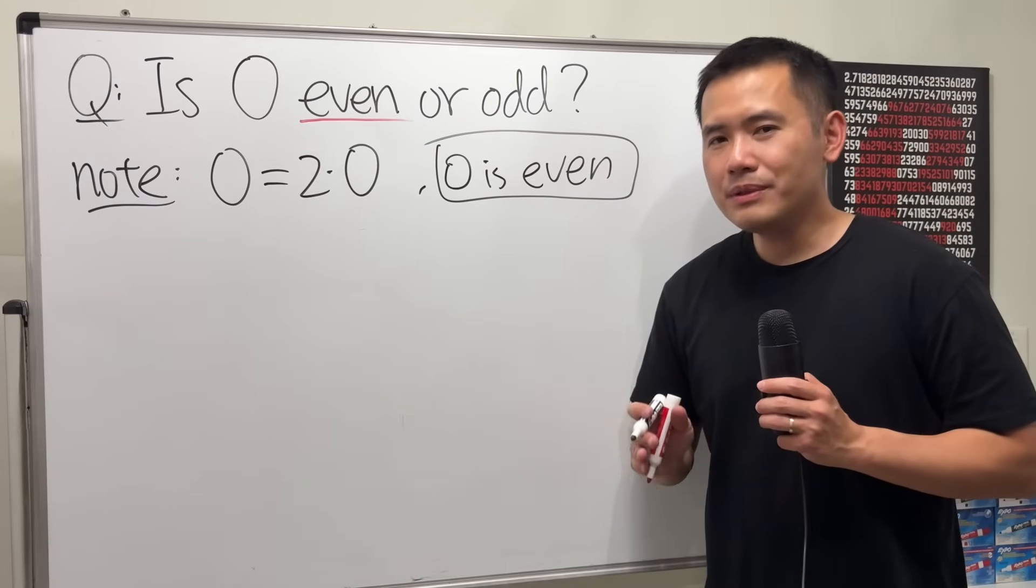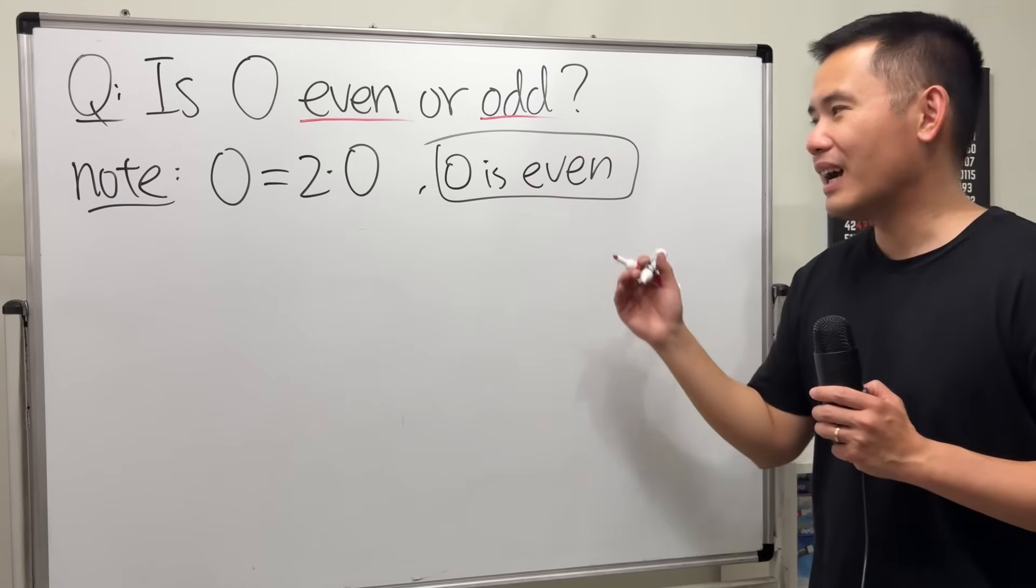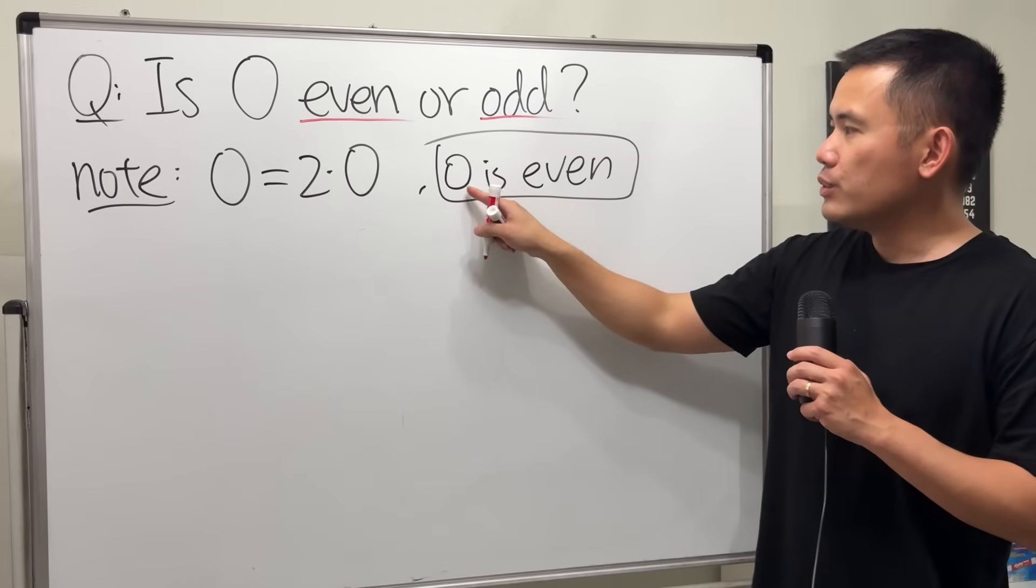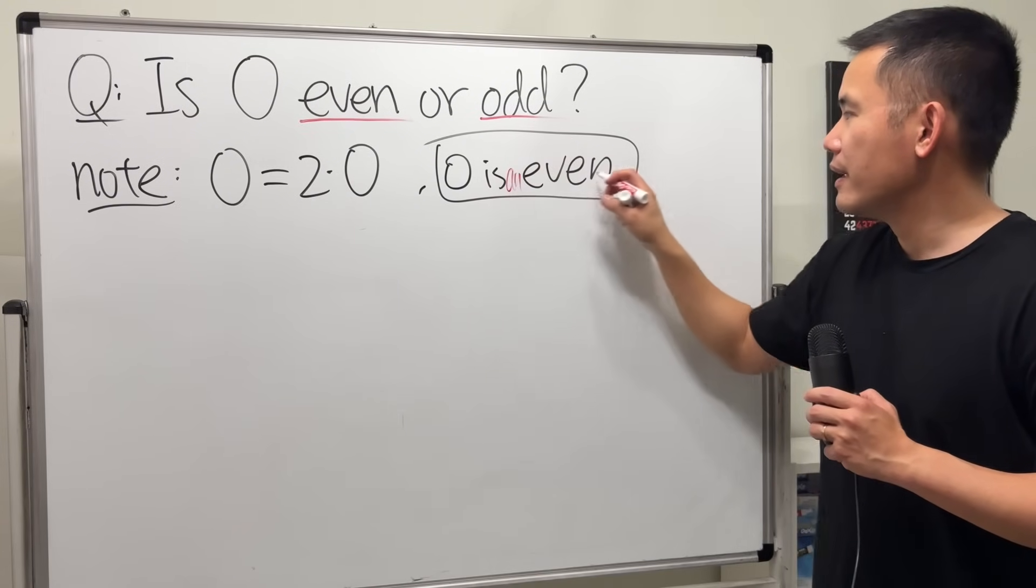But in fact, I'm going to tell you 0 is both even and also odd. Why? Well, have a look. Right here, 0 is an even number. I'll just say an even number.